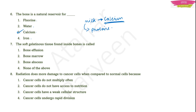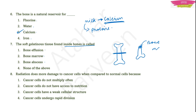Seventh question: the soft gelatinous tissue found inside the bones is called — options are bone effusion, bone marrow, bone abscess, or none of the above. If you cut a bone in a transverse section and look inside, there is a gooey, jelly-like substance — this is known as bone marrow. Bone marrow is necessary for the production of RBCs, or red blood cells. The correct answer is bone marrow.